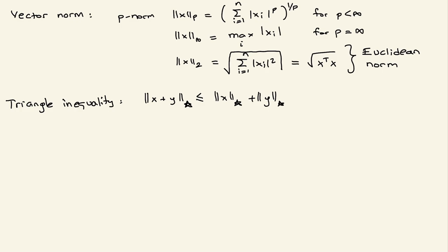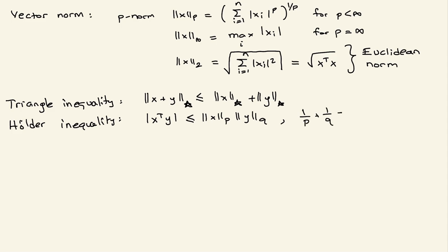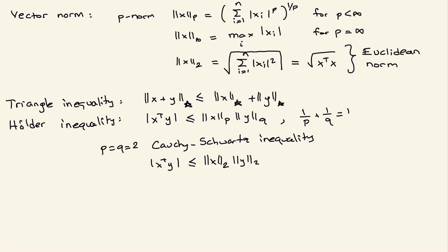The triangle inequality is used in many places. You can also consider other inequalities. For example, one famous one is the Hölder inequality. If you have the absolute value of x-transpose times y, it is upper bounded by ||x||_p times ||y||_q, where 1/p + 1/q equals 1. A special case is when p equals q equals 2, which is called the Cauchy-Schwarz inequality. In this case we simply have |x-transpose y| less than or equal to ||x||_2 times ||y||_2, which is also a well-known result.